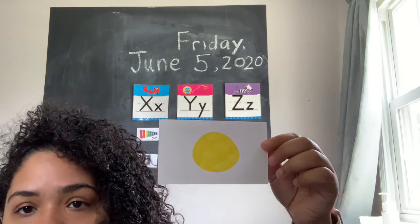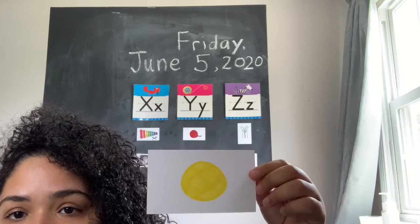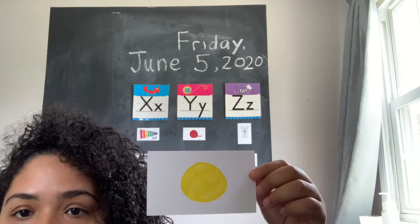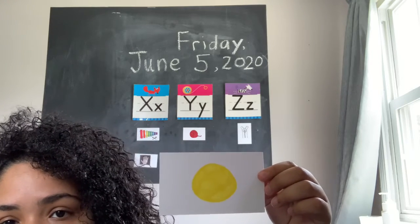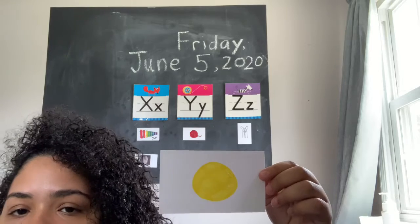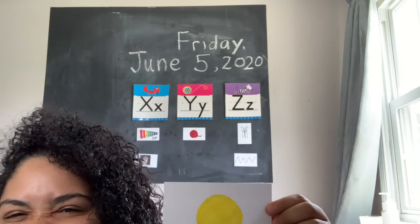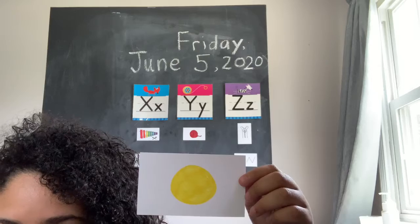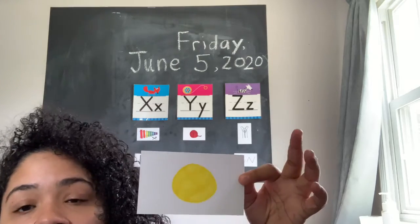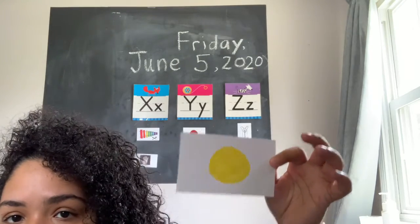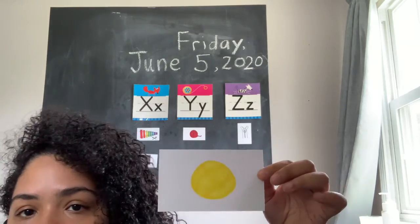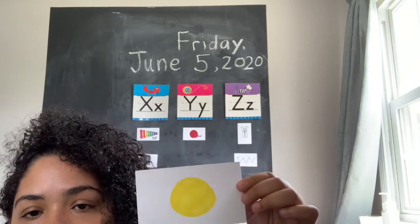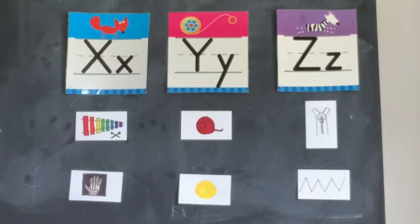Last one we have is the color yellow. Do you hear the X sound in yellow? Do you hear a Y sound, like yo-yo and yarn? Or do you hear a Z sound, like zebra, zipper, and zigzag? I hear a Y sound in yellow, like yarn and yo-yo. So I'm going to go ahead and put it under the letter Y.